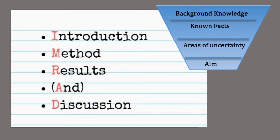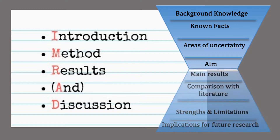When we visualize the IMRAD structure, we'll see that we typically start out with background knowledge, known facts, and areas of uncertainty, narrowing our focus towards what our research aim is, before we broaden out looking at our main results, comparing it with other literature, and discussing the strengths, limitations, and implications of our research for future research. When visualized this way, it resembles an hourglass — a really good way to think about how our writing can unfold.